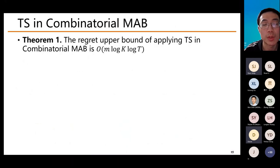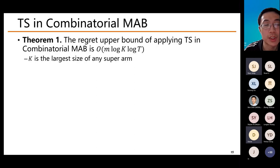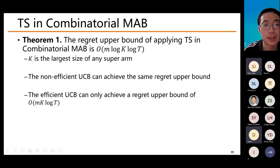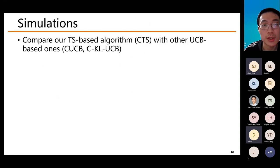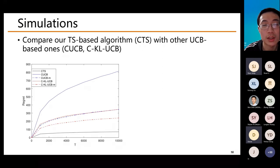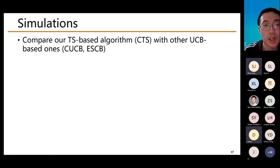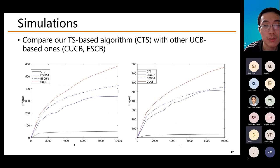We show that the regret upper bound of applying our Thompson Sampling algorithm in the combinatorial multi-arm bandit is only m times log k times log t, where k is the largest size of any superarm. As a comparison, the non-efficient UCB using the ellipsoid as the confidence region achieves the same regret upper bound, while the efficient UCB using the cube as the confidence region can only achieve a regret upper bound of about mk log t, which is about k times higher than our regret upper bound. Simulations confirm this: our Thompson Sampling algorithm has much smaller regret than efficient UCB algorithms, and even outperforms non-efficient UCB algorithms.